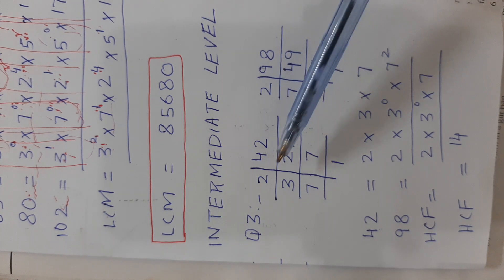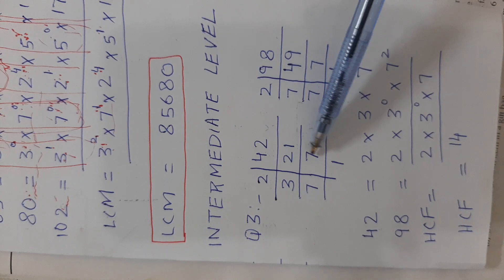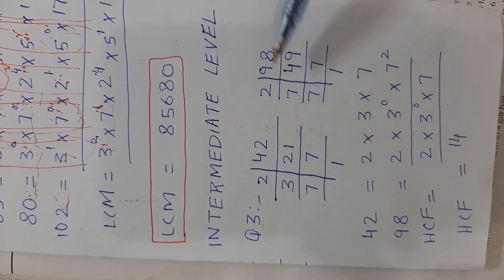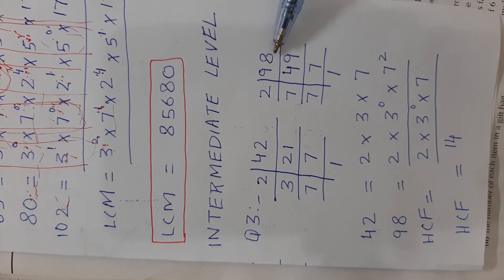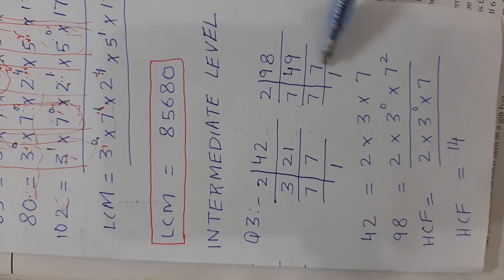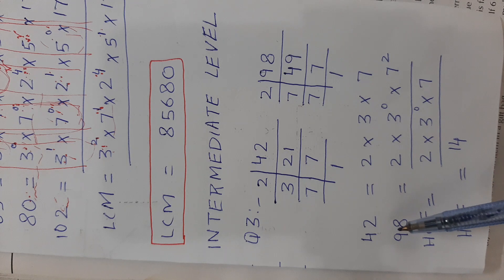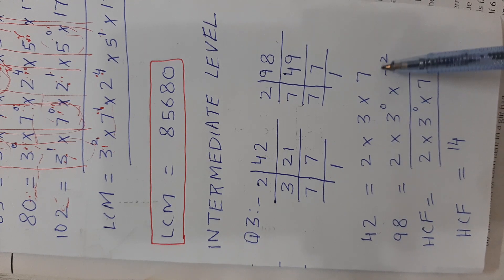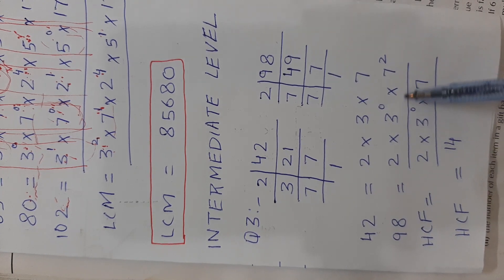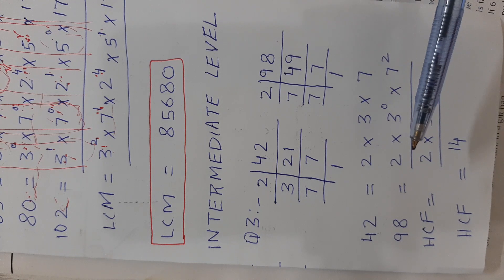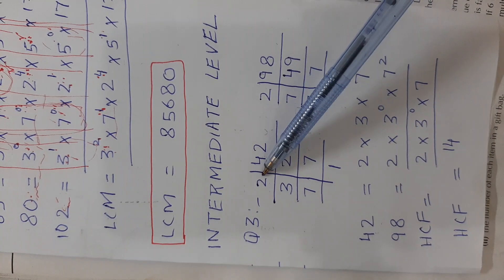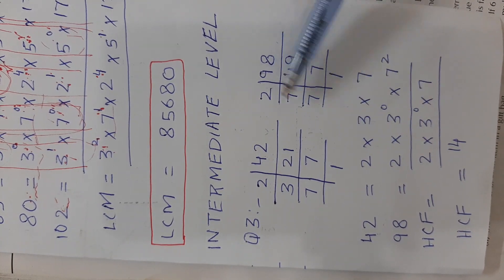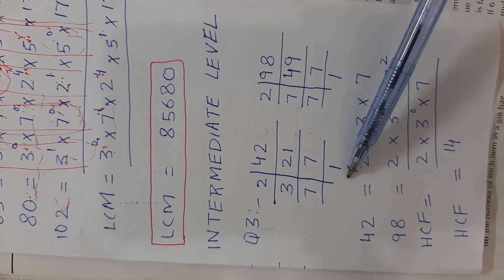Prime factorization of 42: 2 × 21, 3 × 7, giving 2 × 3 × 7. Similarly, prime factorization of 98: 2 × 49, 7 × 7, giving 2 × 7². Write down the factors of 42 and 98, placing the same factors in the same column — like 2 as a factor of both must be in the same column.